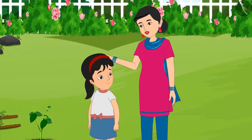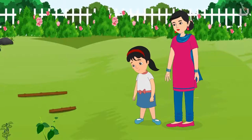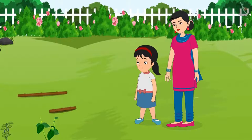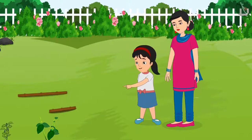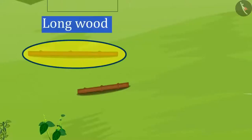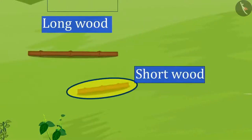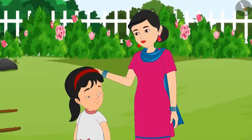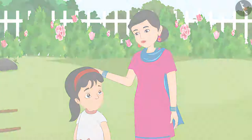Mother says: Now look around and give me another example of a long object and a short object. Can you do that? Pinky replies: Mummy, please look at these two sticks. Out of these, this stick is long and this stick is short. Right? Mother says: Yes Pinky, very good. Now let's go home.